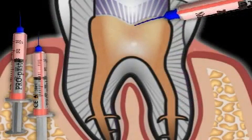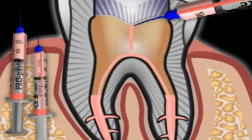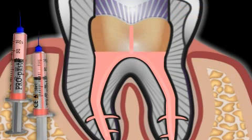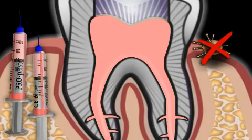Once the inside of the tooth is completely clean and the tooth no longer causes any discomfort, the interior of the tooth is tightly sealed with a special compound. The tooth should also be tightly sealed from the top, in effect from the access, because only then is it guaranteed that bacteria can no longer enter.